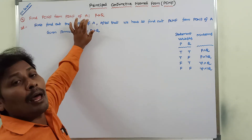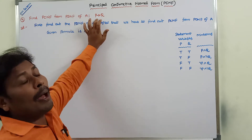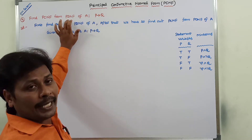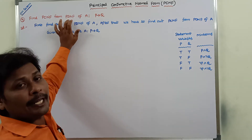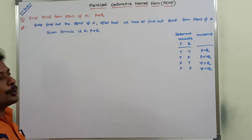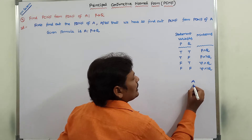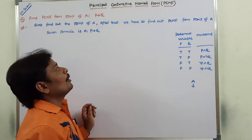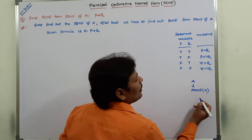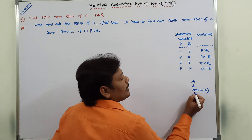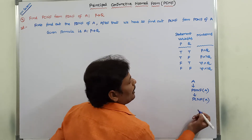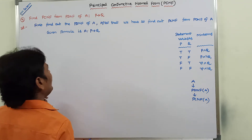The given formula is denoted by A, which contains P conditional Q. For the given formula, first we have to find out the PDNF. Once we find out the PDNF, from that we have to find out the PCNF. So this is the procedure we have to follow.